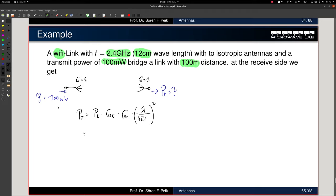We just plug in everything, 100 mW is 0.1 Watt, G transmit is 1, G receive is 1, and our lambda is 12 cm. So this becomes 0.12 m over 4 pi 100 m and the thing squared.